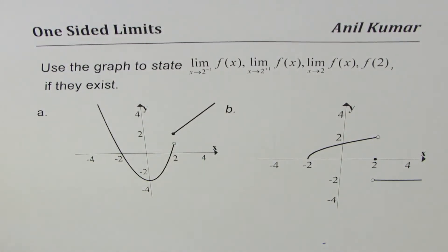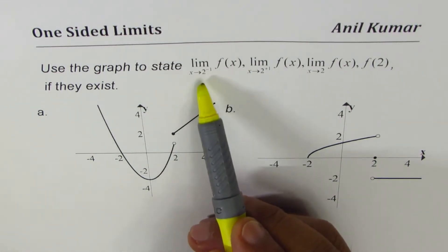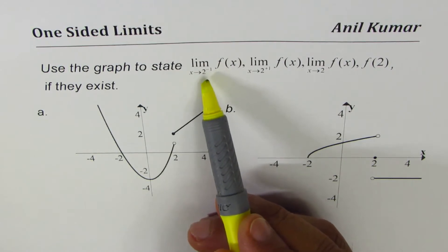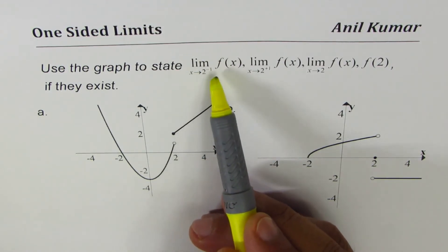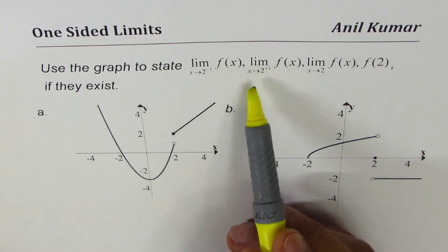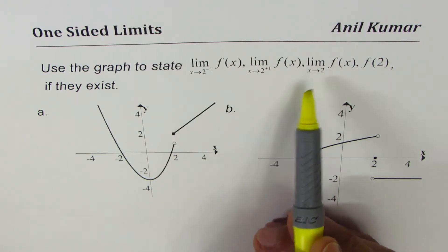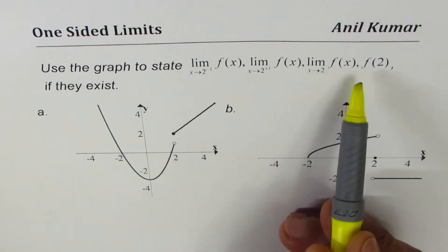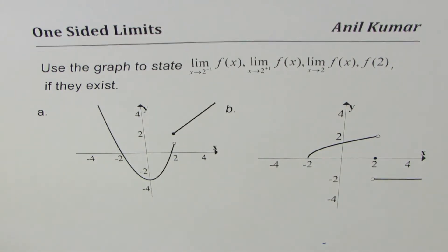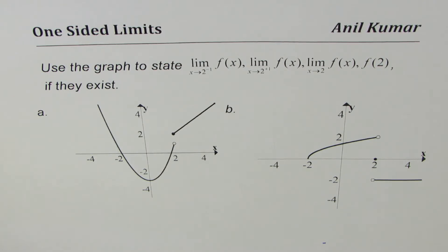I'm Anil Kumar and in this video we are going to understand one-sided limits. The question is: use the graph to state the limit as x approaches 2 from the left side of f of x, the limit as x approaches 2 from the right side of f of x, the limit of the function as x approaches 2, and f of 2, if they exist. We have two examples here and we'll study how to find limits and the value of the function from the given graph.